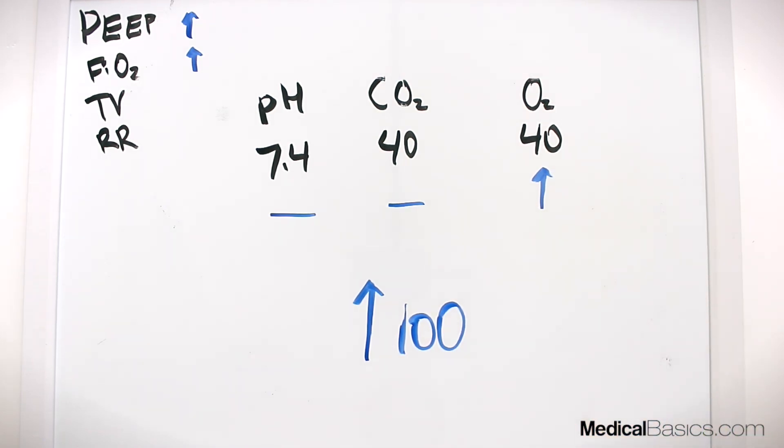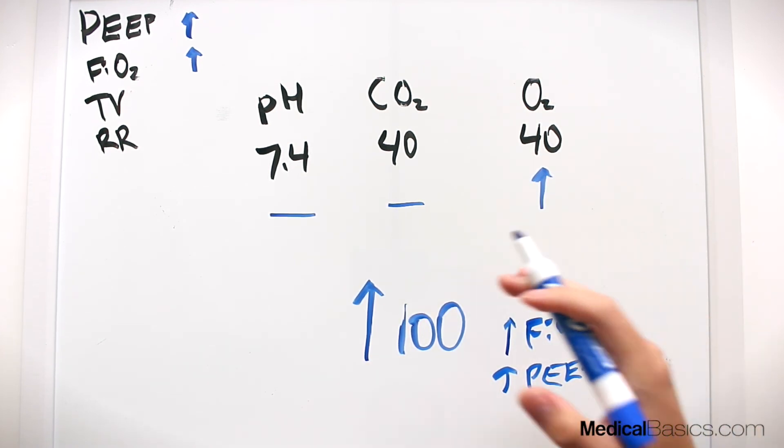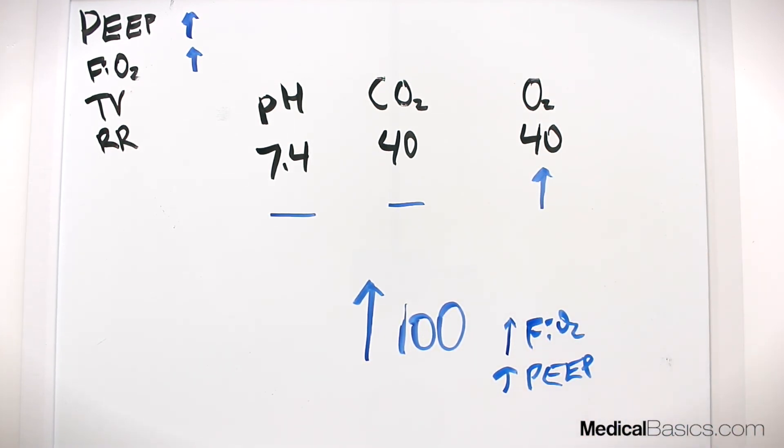The same thing goes with FiO2 and PEEP, and even more so because if you give someone just 100% oxygen, oxygen actually for the long term can be toxic. So we want to increase FiO2 as well as increasing PEEP. And there's actually a really good table that tells you how much you should increase each one for every increment of O2 that you want to increase it at. And that's ARDSnet Ventilator Protocol.